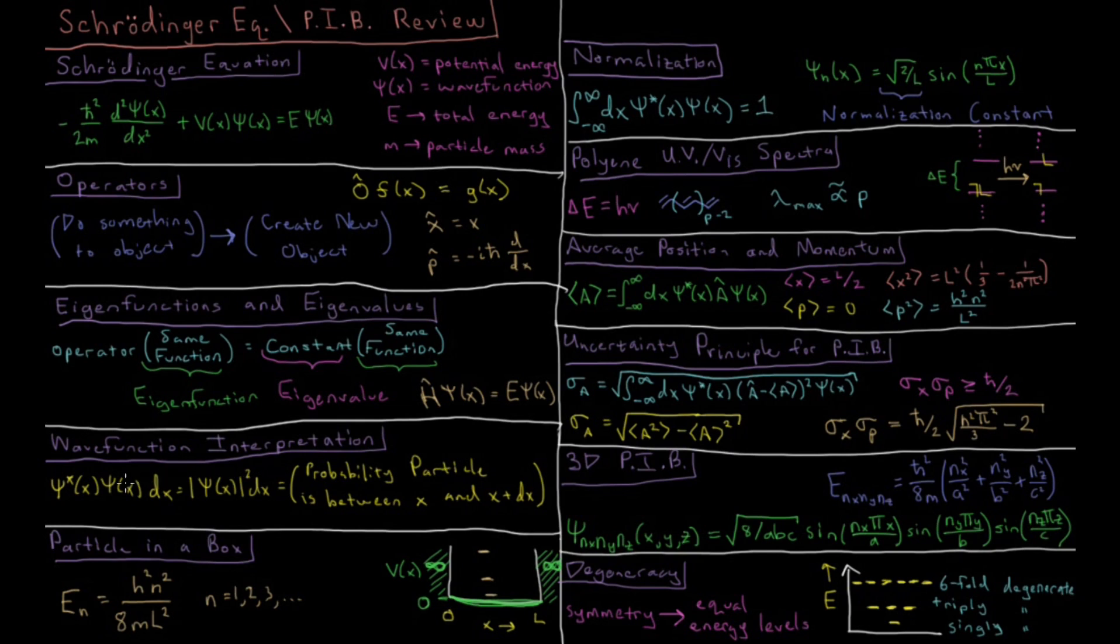For this interpretation of the wave function squared as a probability density, we need to enforce a condition called normalization. The integral over all space, so minus infinity to infinity if the particle has just x, of psi star times psi, the wave function squared, has to equal 1 because this means that there has to be a 100% chance that we find the particle somewhere in space.